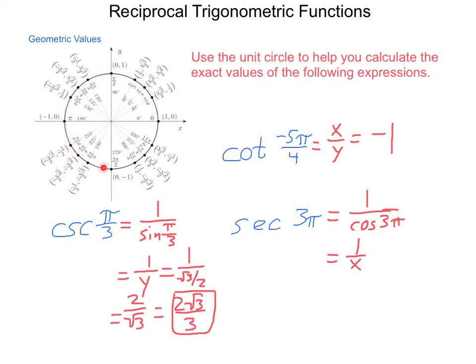3π is going to be on the negative x axis. So we have 1 divided by a negative 1, because that's the x value at that location, which is simply a negative 1. So using just the unit circle, we can calculate exact values.